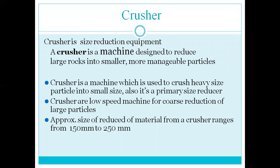A crusher is nothing but size reduction equipment. A crusher is a machine designed to reduce large rocks into smaller or more manageable particles, used to crush heavy size particles into small size. It is a preliminary, primary size reducer — a low speed machine used for coarse reduction of large particles. The approximate size of reduced materials from the crusher ranges from 150 to 250 mm.